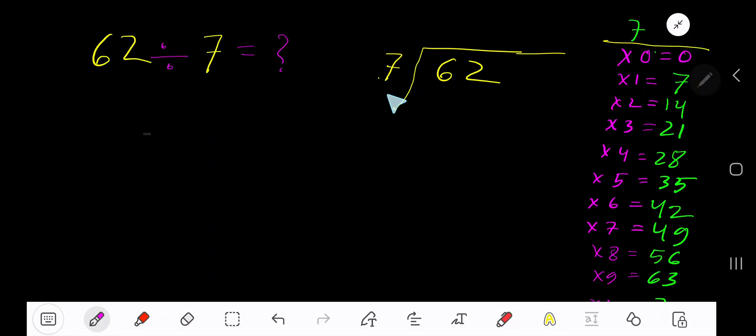62 divided by 7. Here 7 is a divisor, so we need multiplication table of 7: 7×0=0, 7×1=7, 7×2=14, 7×3=21, 7×4=28.